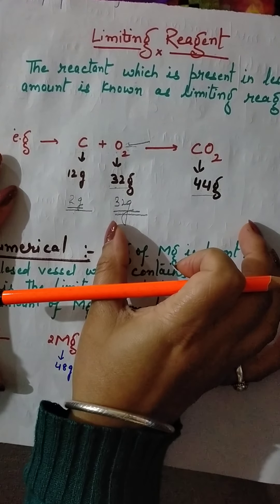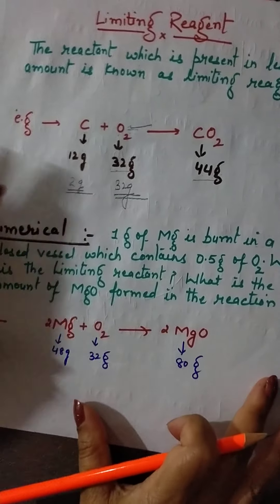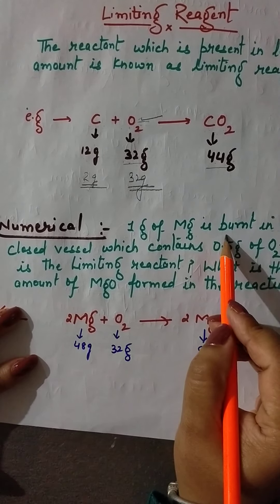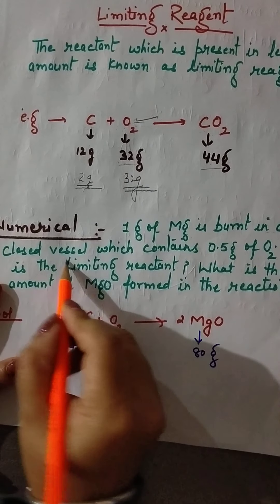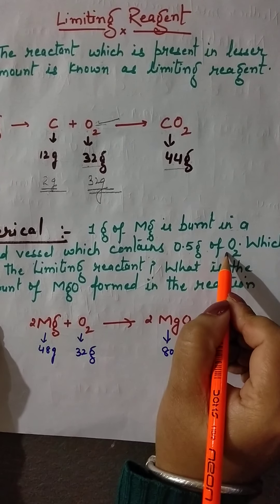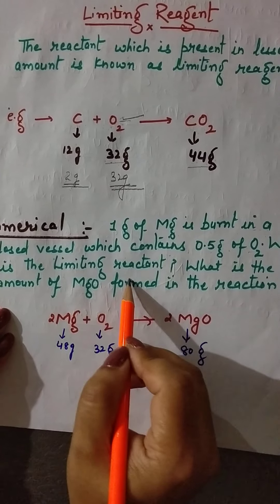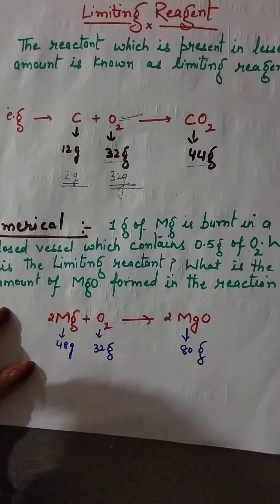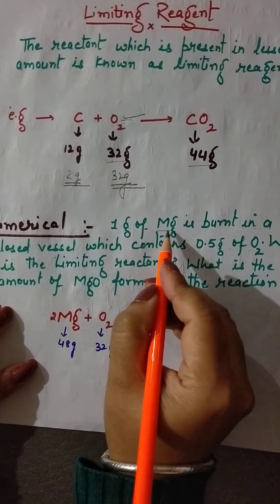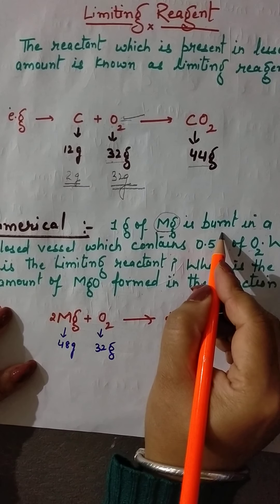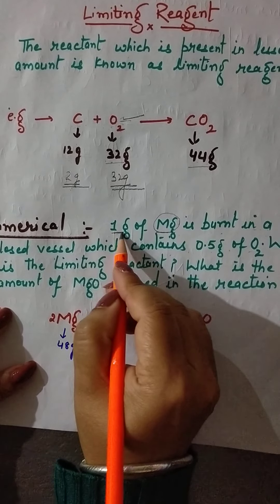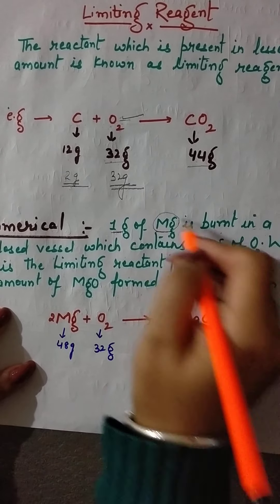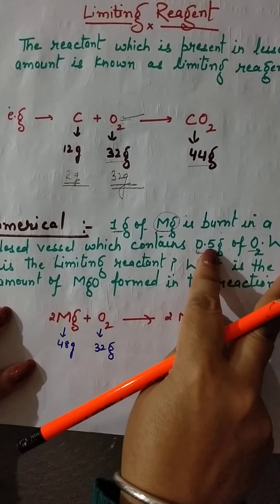We write a standard balanced equation and from there take information in the form of moles. Now let's take another numerical: 1 gram of magnesium is burnt in a closed vessel which contains 0.5 gram of oxygen. Which is the limiting reactant and what is the amount of magnesium oxide formed? You have 1 gram of magnesium and 0.5 gram of oxygen.